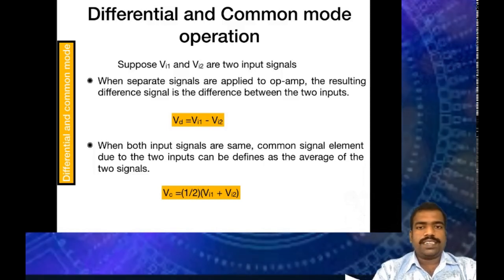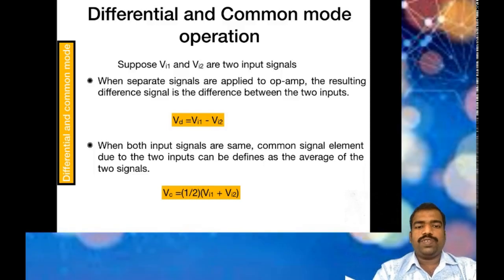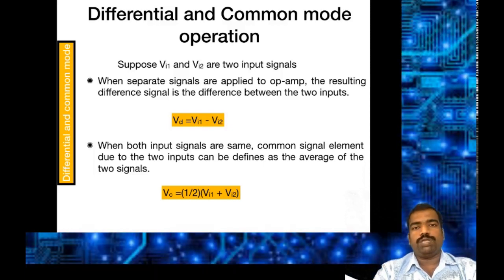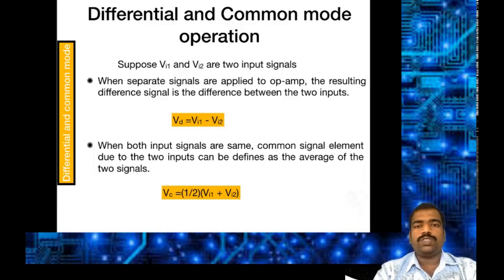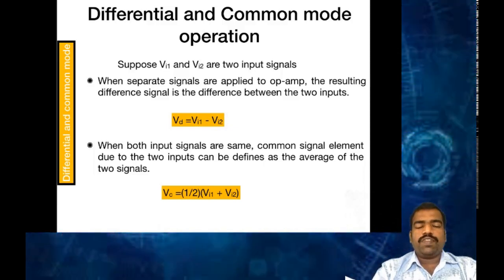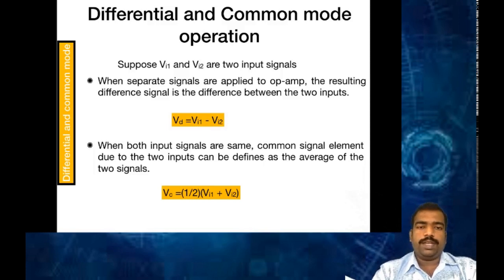For the differential component, you just take the difference Vi1 minus Vi2. When the signals are common, you need to consider the common element. The common element is the average between these two signals. So, the common voltage Vc is half of Vi1 plus Vi2, and the difference voltage Vd is Vi1 minus Vi2.